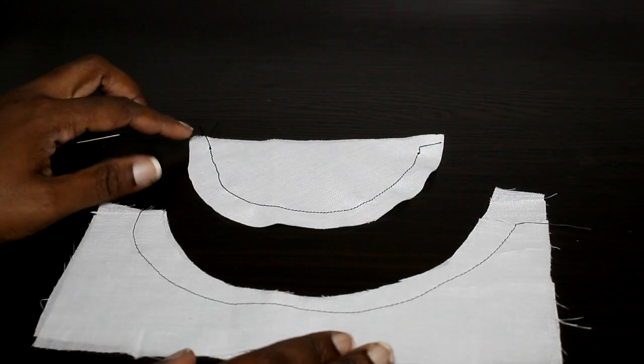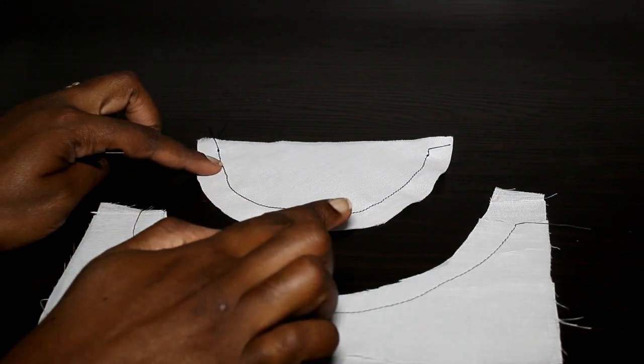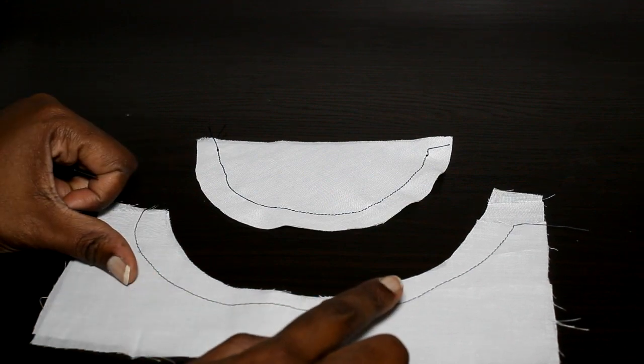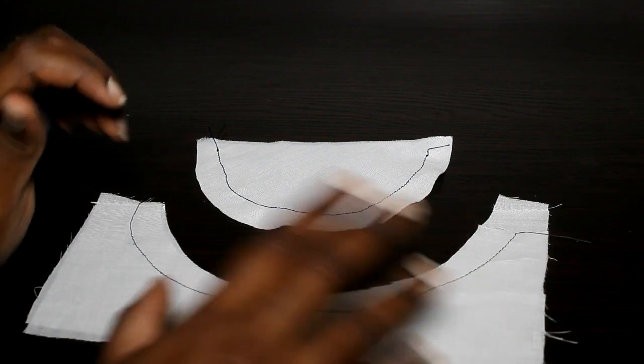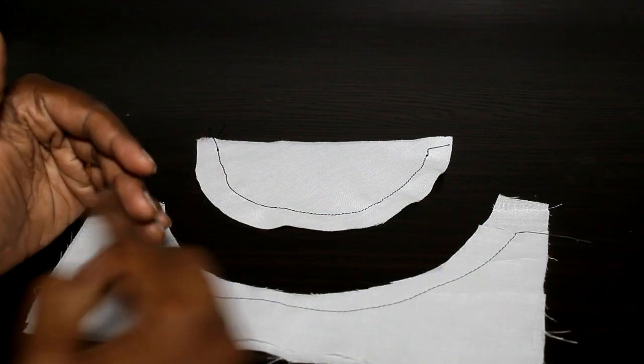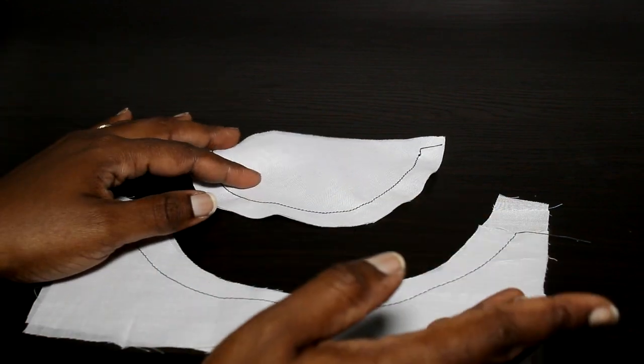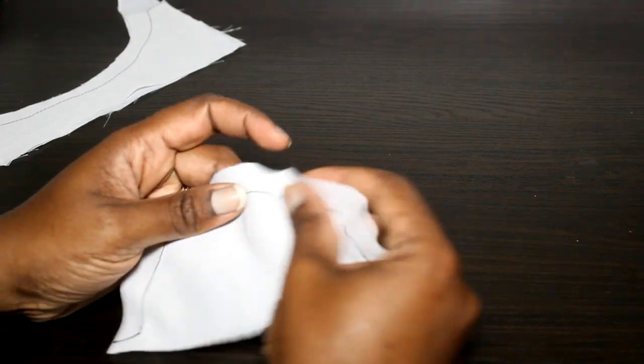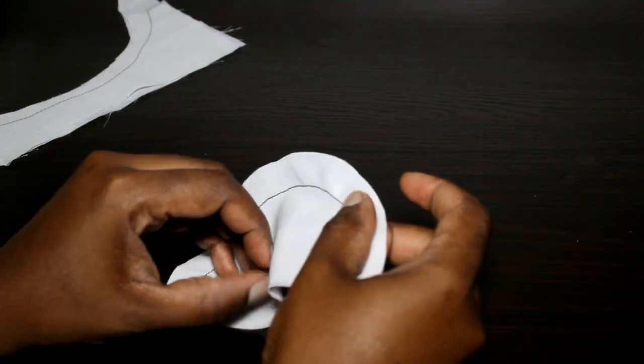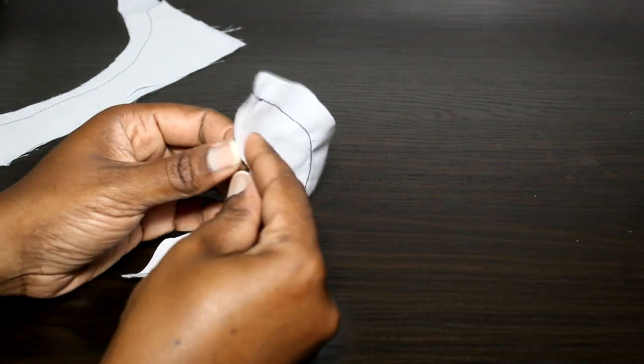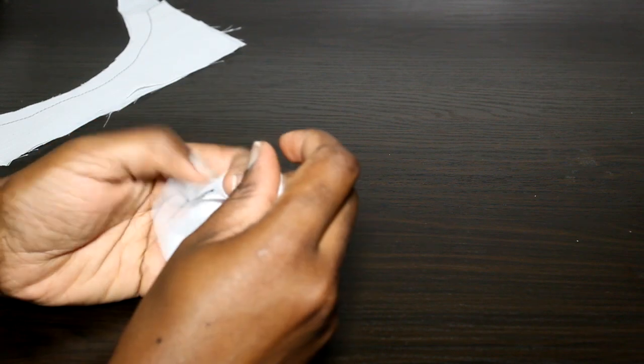Now in regards to curved shapes, whether it's an outer curve like this or an inner curve like this, when you want to turn it out to the right side after sewing, I'll start with this curve. You also have the same issue of bulk. So I'm going to turn this the other way.